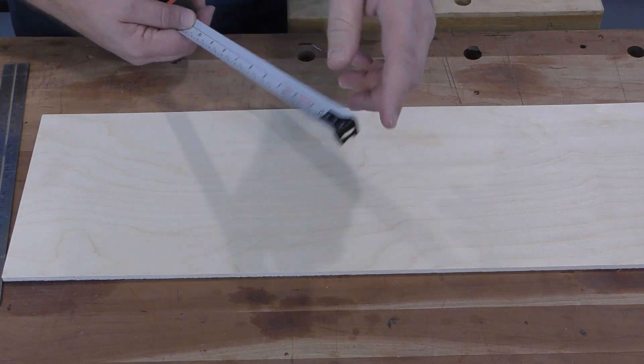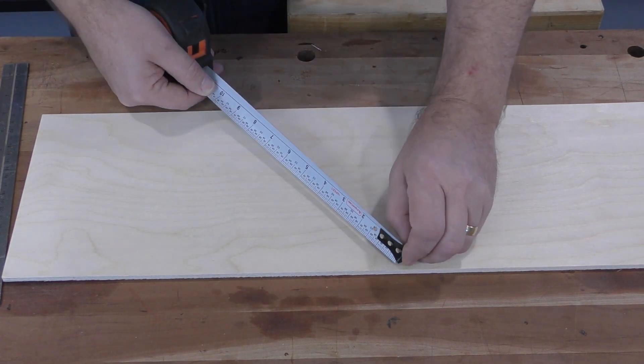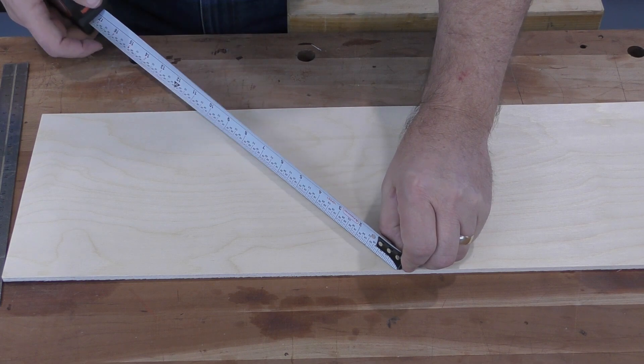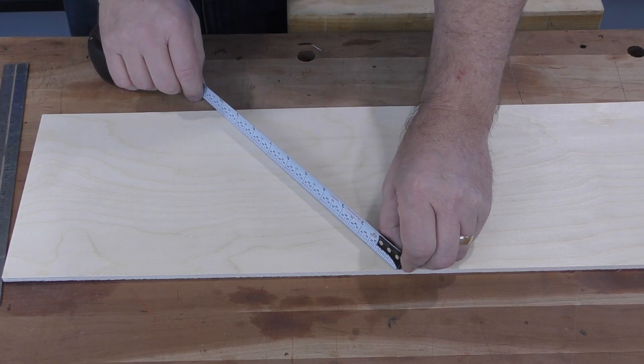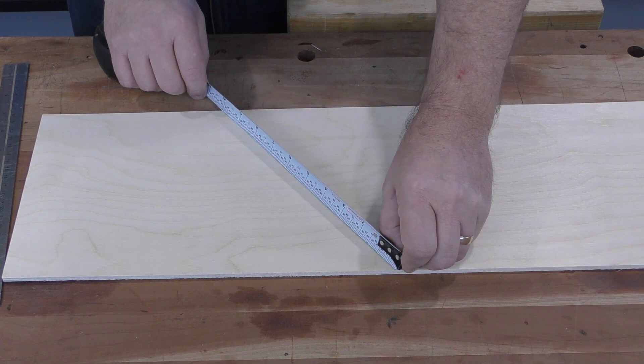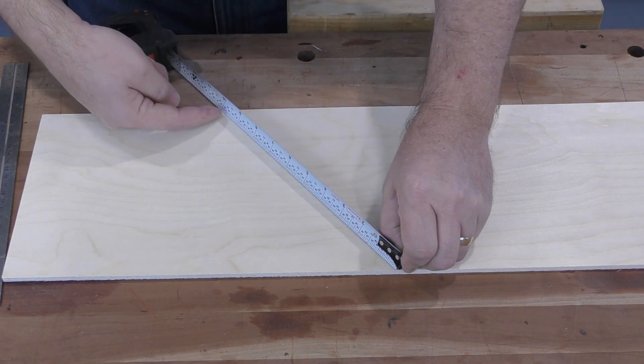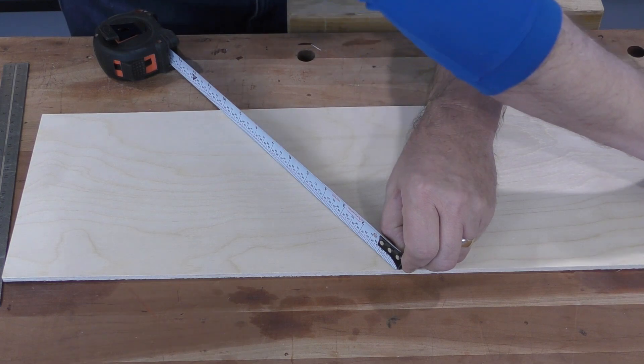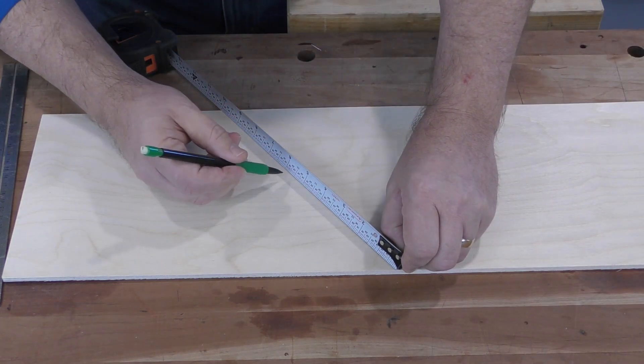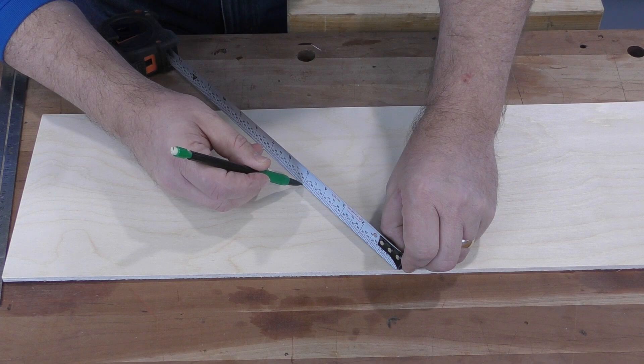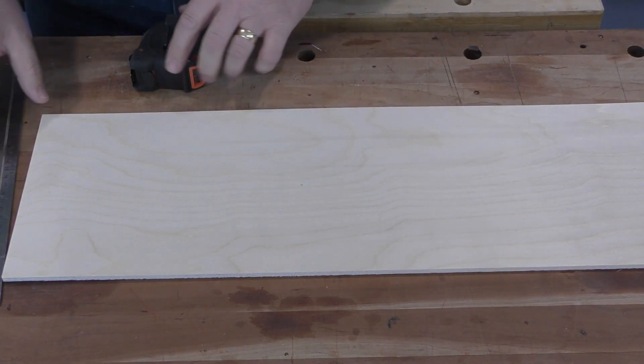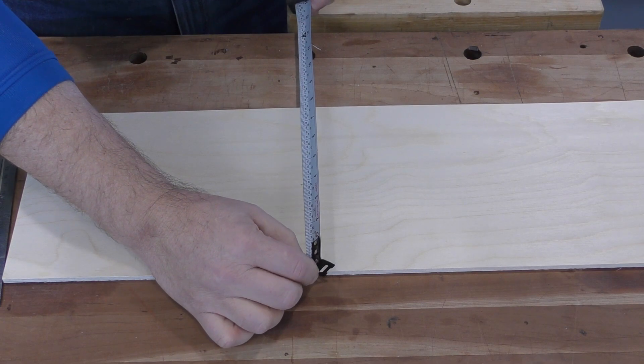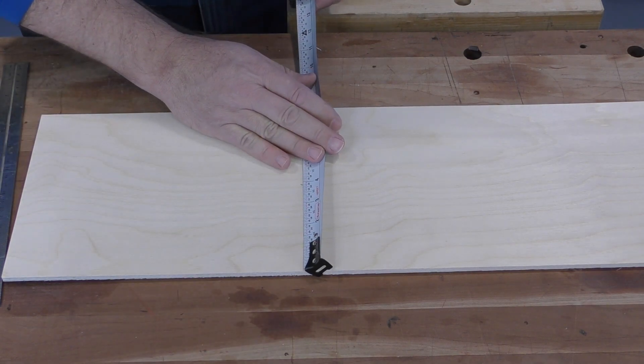But I don't have to do that. All I have to do is lay my tape across to any easily divisible number. Let's go for 10 inches in this case. So now I've got 10 inches of tape measure going from here to there. All I have to do is mark the board at the 5 inch point, and that will be the center. Let's check it out and see how accurate that was. Oh look, 3 and 7 eighths.